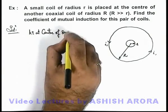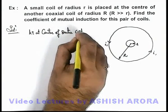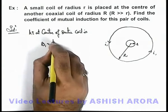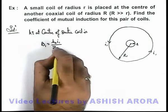of outer coil is, this B1 can be written as mu-not i1 by 2R.